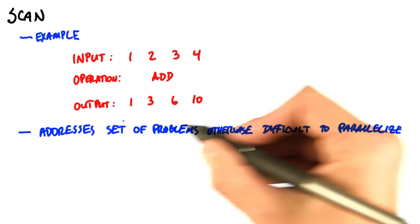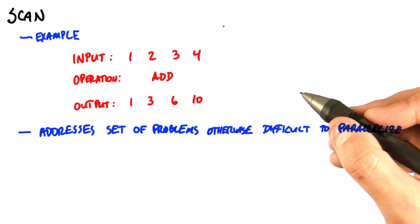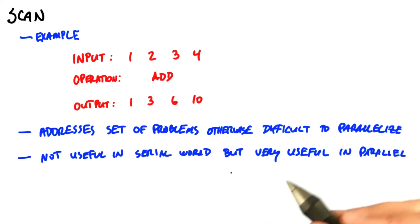But this style of operation turns out to be incredibly useful. It's also interesting because scan is just not a very useful operation in the serial world. It's really only useful when you're doing parallel computation. But once you know it and use it, you'll wonder what you ever did without it.